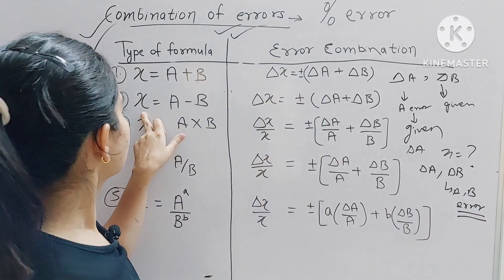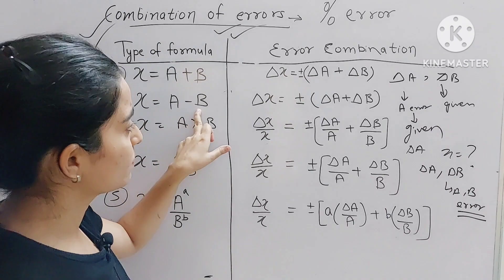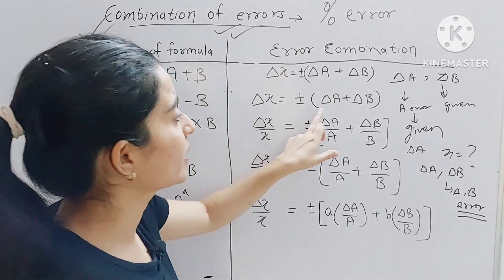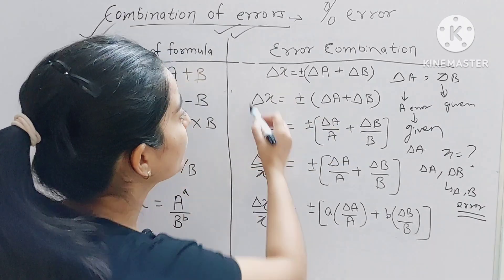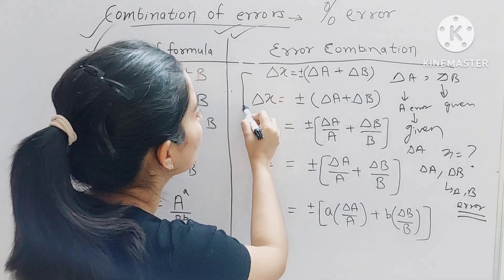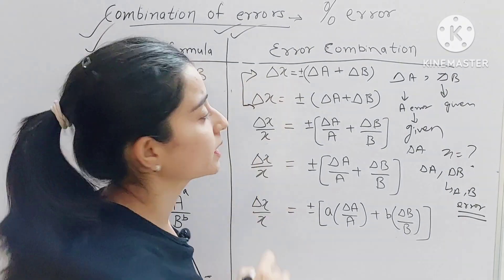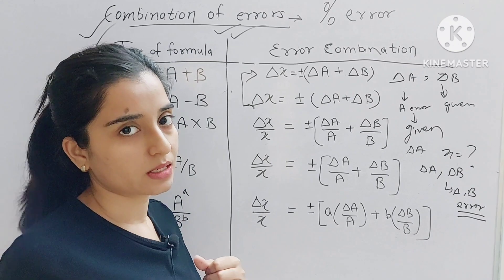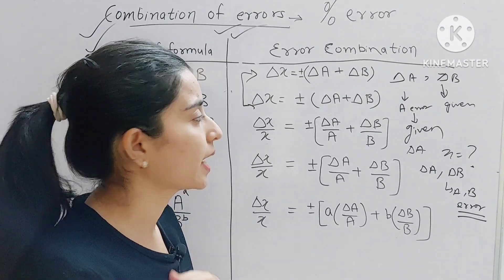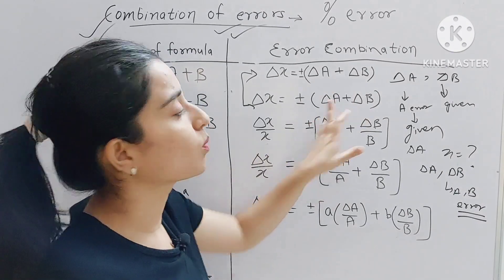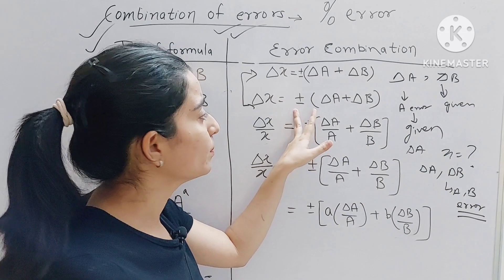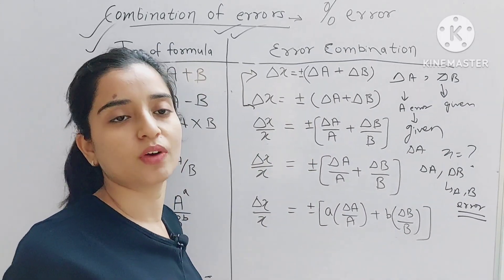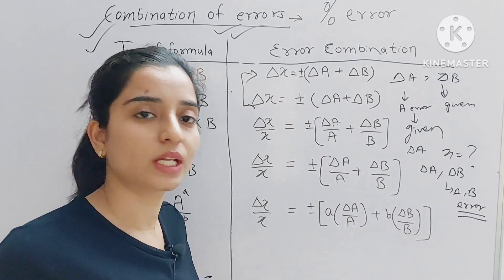The next case is x = A − B. The formula is the same: Δx = ±(ΔA + ΔB). Whether we are talking about addition or subtraction, the sign plays no role — the two error combination formulas remain the same. We simply add the errors and the final result will be the same.